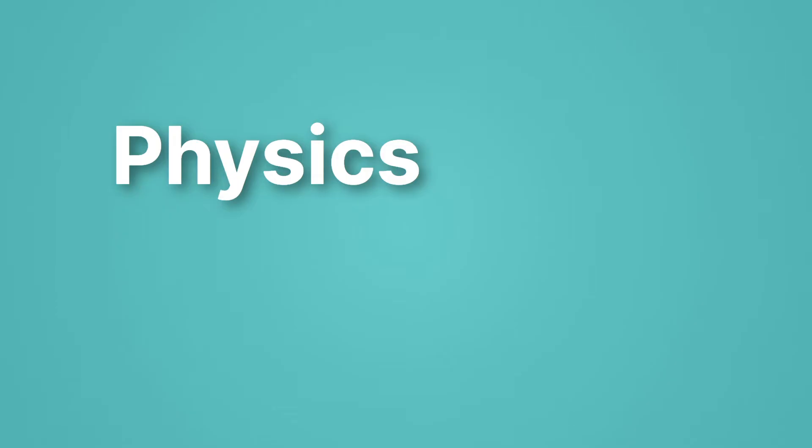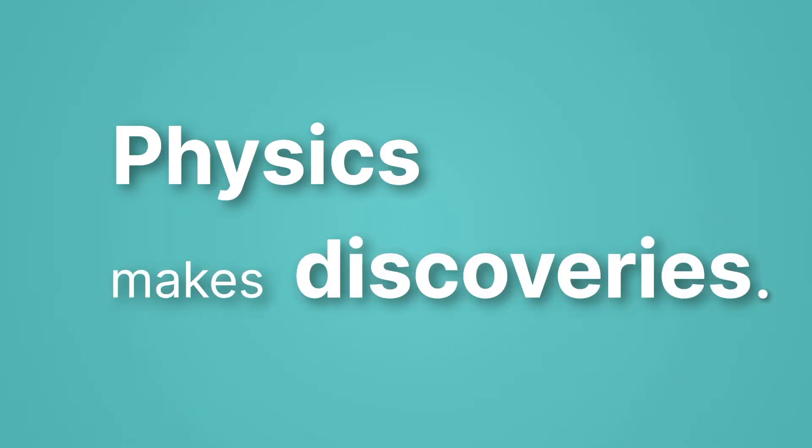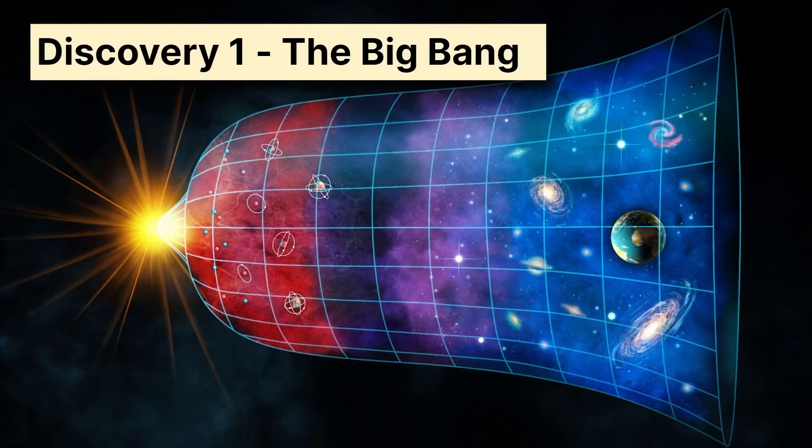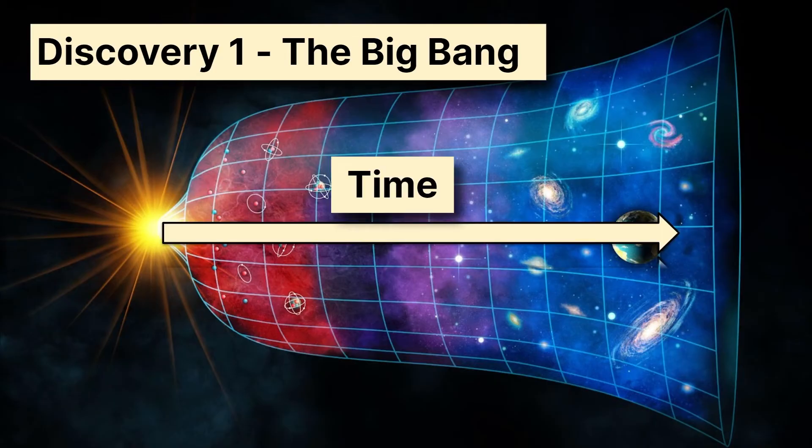Physics also makes discoveries. Let's review now three discoveries physics has made. First up, the big bang. We mentioned this at the beginning of the video. And this chart is telling us about time as we go forward. And that bright light at the beginning represents the beginning of the universe. How did we figure this out?